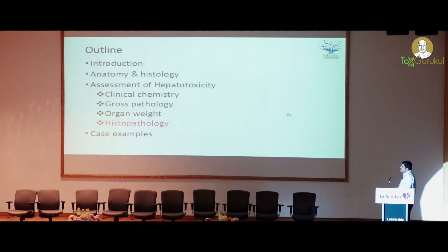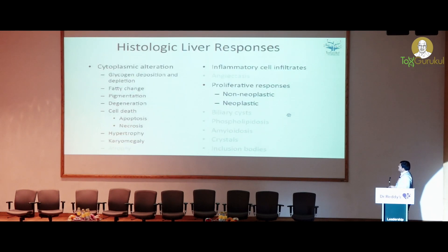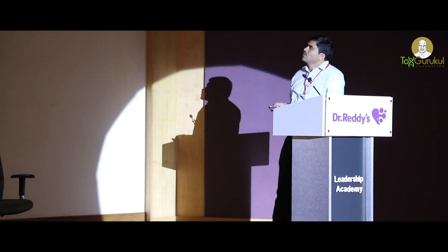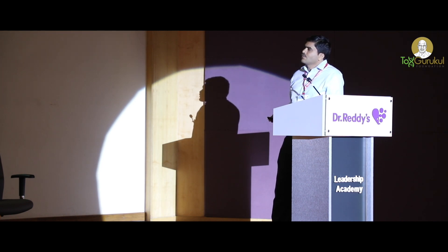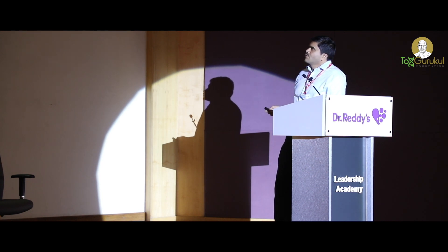Coming to histopathology, these are the common lesions found in the liver, which include cytoplasmic changes like glycogen deposition or depletion, fatty change, pigmentation, degeneration, cell death — apoptosis or necrosis — or hypertrophy or karyomegaly. Rarely we see atrophy, and inflammatory cell infiltrates and proliferative lesions will also be seen.